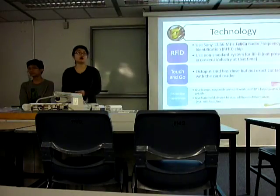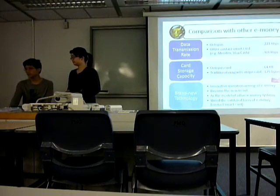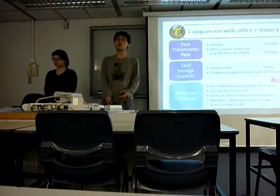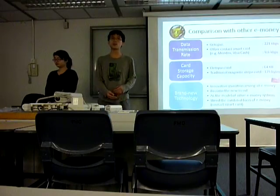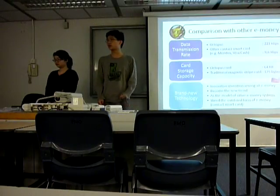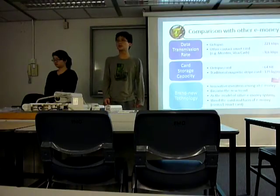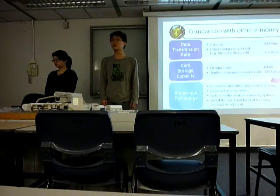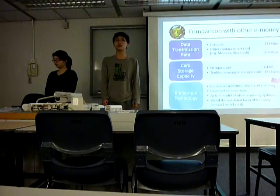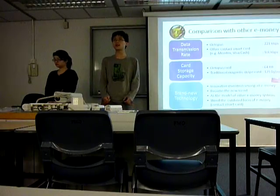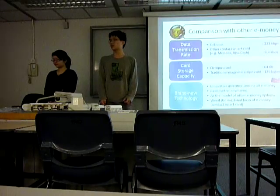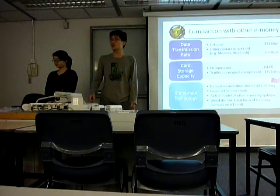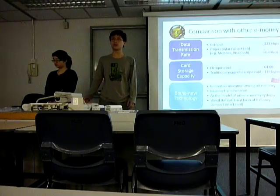After talking about the Octopus card technology, I also want to talk about the differences between the Octopus card and other kinds of electronic money. We have divided this into three types. For the data transmission rate, the Octopus card transmits at 221 kbps, while other contact smart cards, for example Mondex and Mr. Cash, can only transmit at 9.6 kbps. On the other hand, for card storage capacity, Octopus cards can store 64 kB, but traditional magnetic stripe cards only hold 125 bytes, which means Octopus cards have over 500 times the storage capacity.